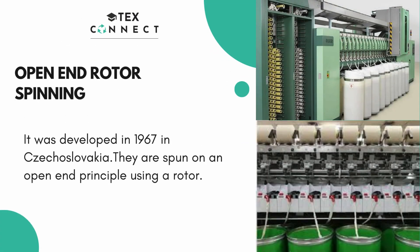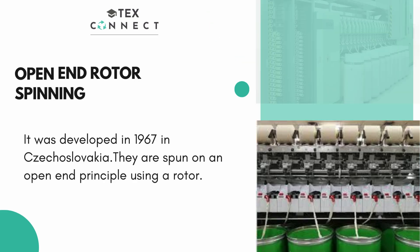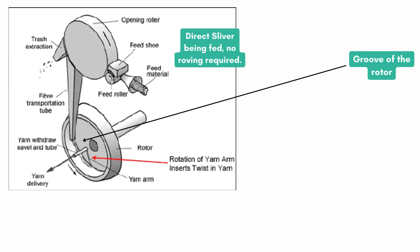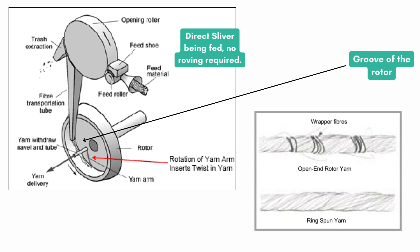The open end rotor spun yarn was developed in 1967 — quite late compared to ring spinning — in Czechoslovakia. Yarns are spun on an open end principle using a rotor. After the sliver, the fibre bundle is separated into individual fibres directly into the air stream and then recollected into the groove of the rotor. The rotor itself is the twisting device of the spinning system. Since the fibres are opened into individual open fibres and then spun back into the groove, we call it open end spinning. This rotor spinning system can process carded or drawframe slivers directly. It also has a set of fibres that wrap the core of the yarn, called wrapping fibres, which play a role in the strength and tenacity of the yarn.